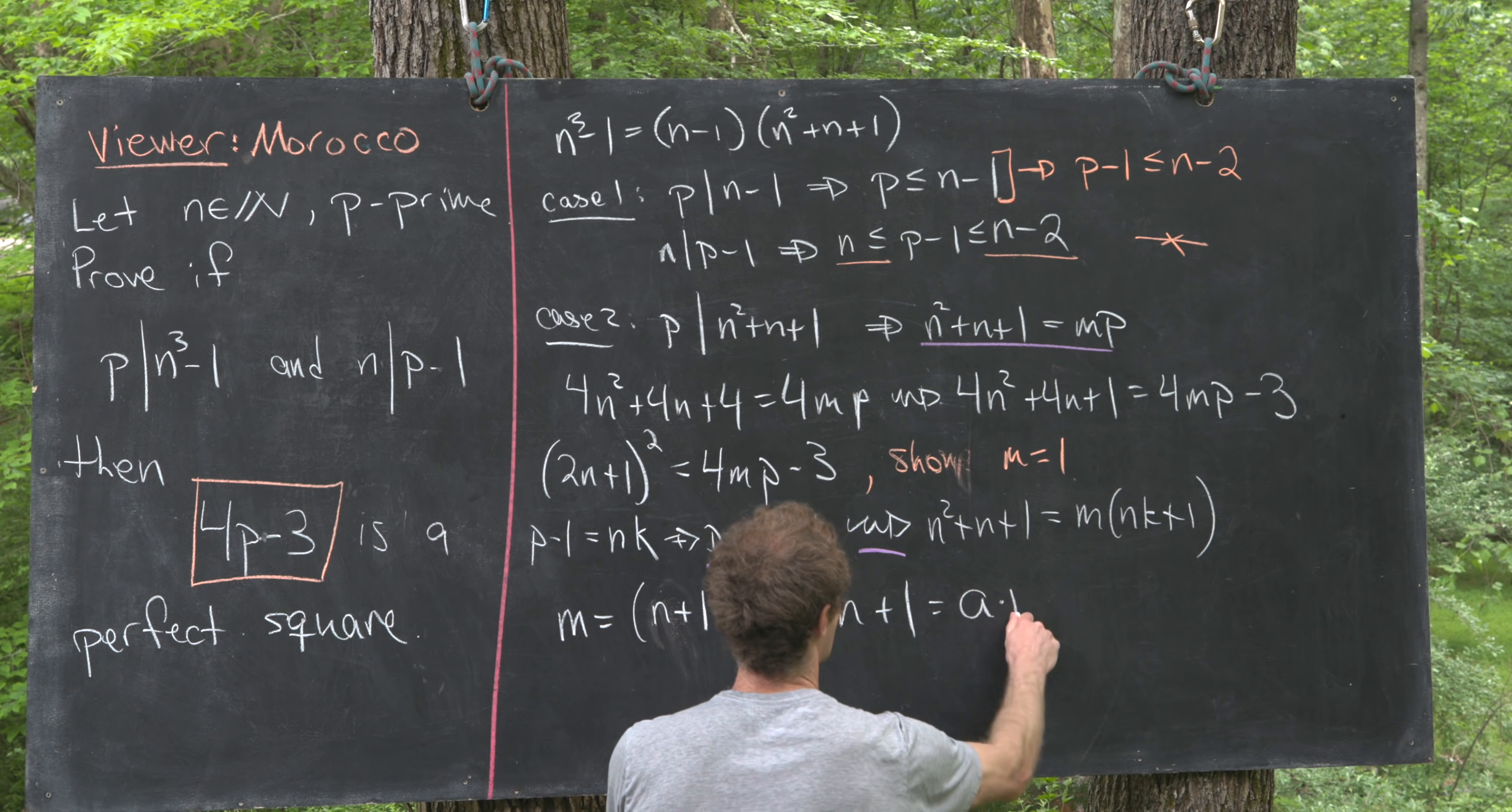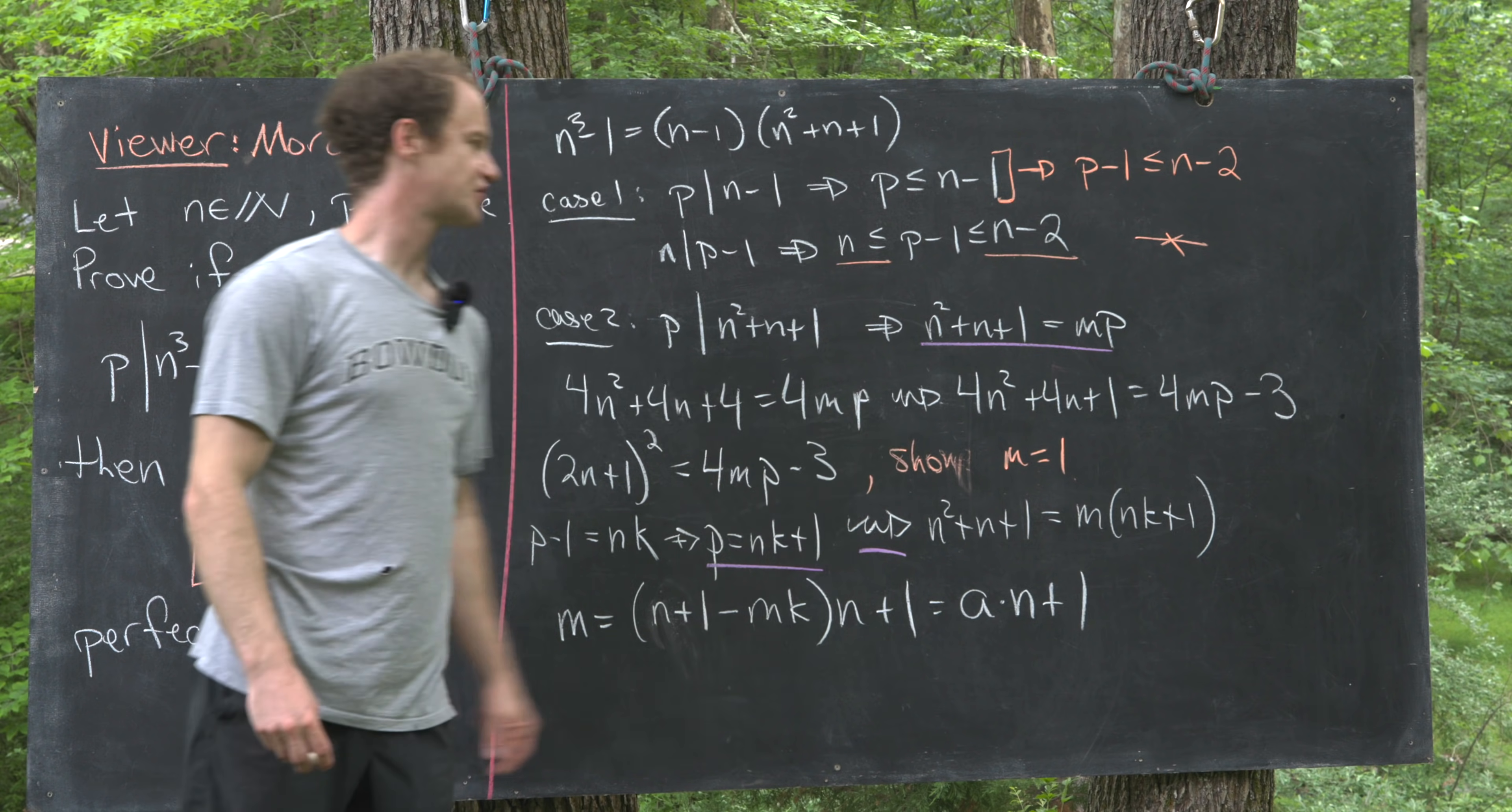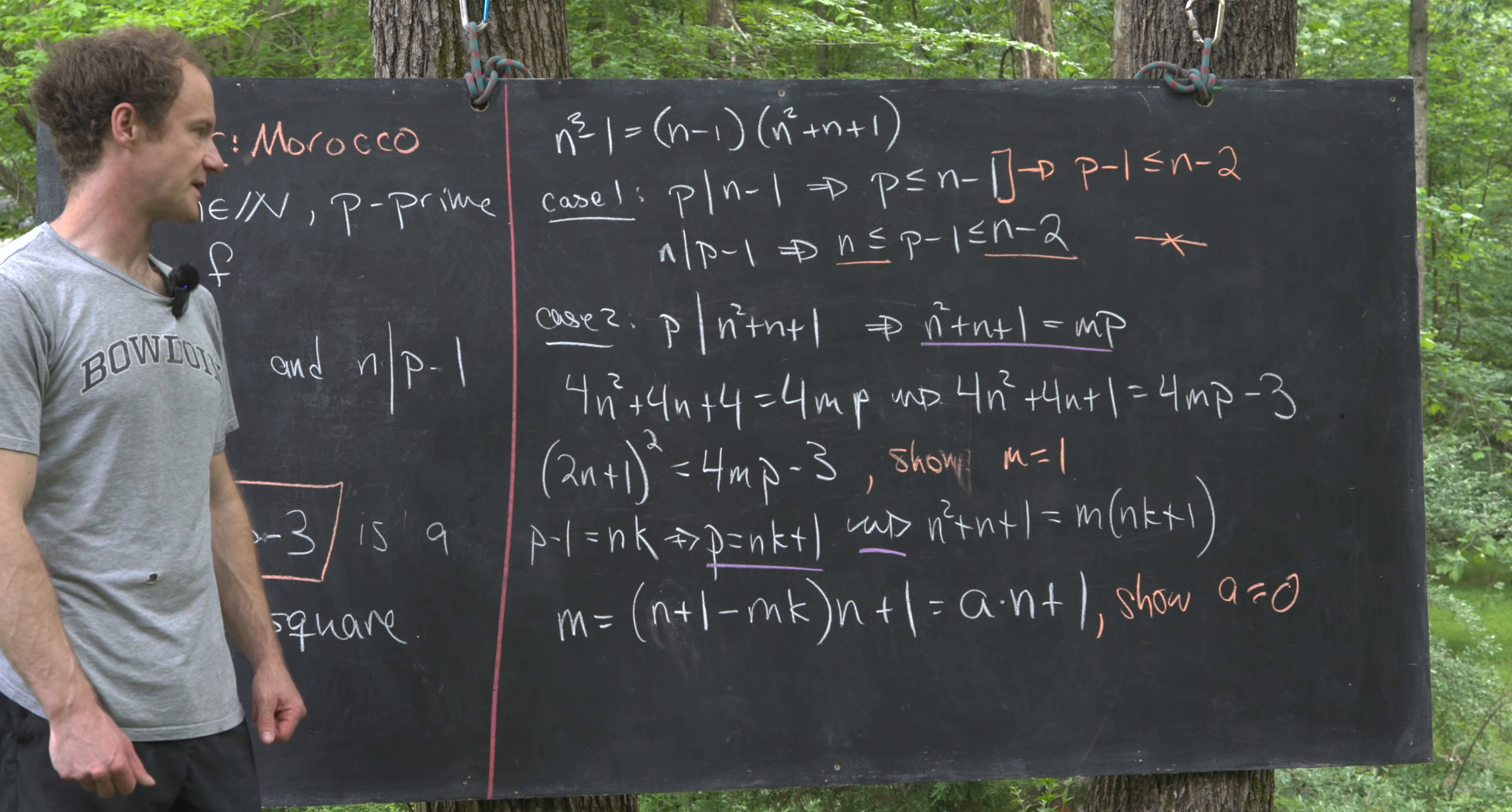But now notice that's of the form a times (n+1), where we've just absorbed all of these guys together into a. So notice our goal was to show that m was equal to 1, but that's been changed to the goal of showing that a has to be equal to 0. So let's see where we can go from here.